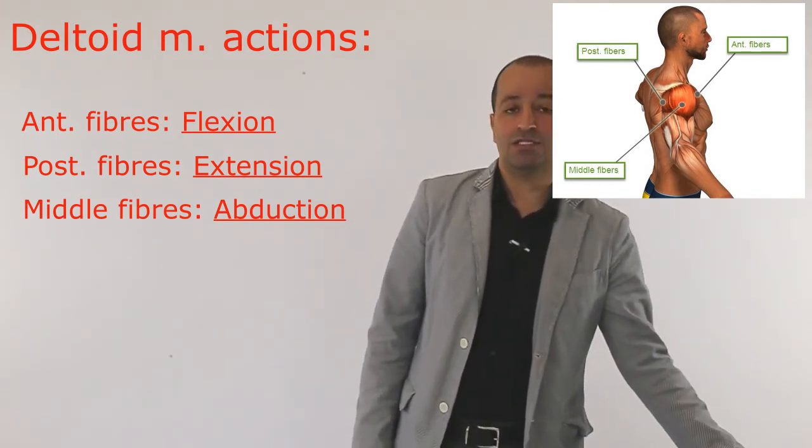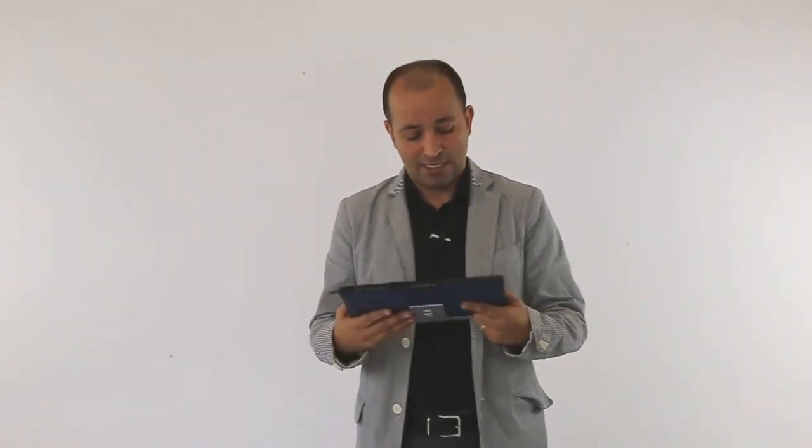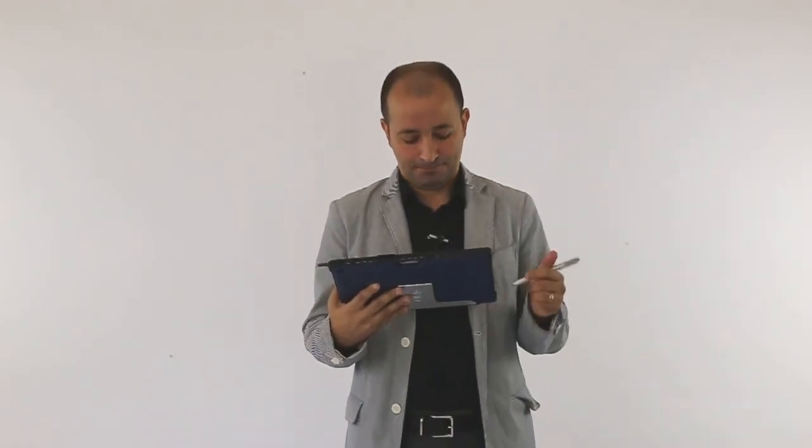The other answer choices are obviously not the actions of deltoid. Flexion of the elbow — for sure not. Abduction of the shoulder and external rotation of the shoulder, or flexion of the shoulder, are the distractors to be aware of.